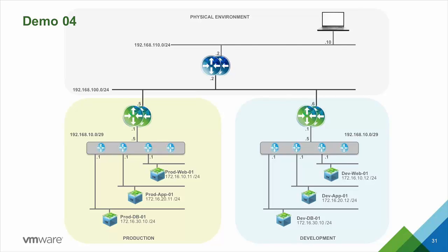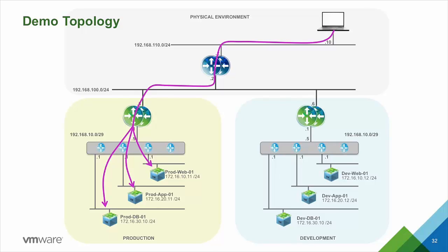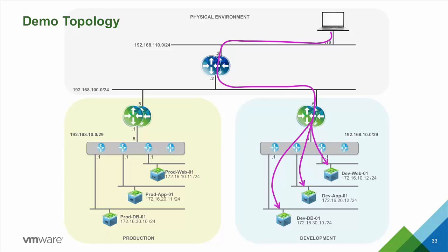For the last demo we will recover our initial environment with separated production and development topologies, and we will see how to use the SSL VPN functionality of NSX to provide end users remote secure access to each of the environments — first to the production environment, and then to the development environment.